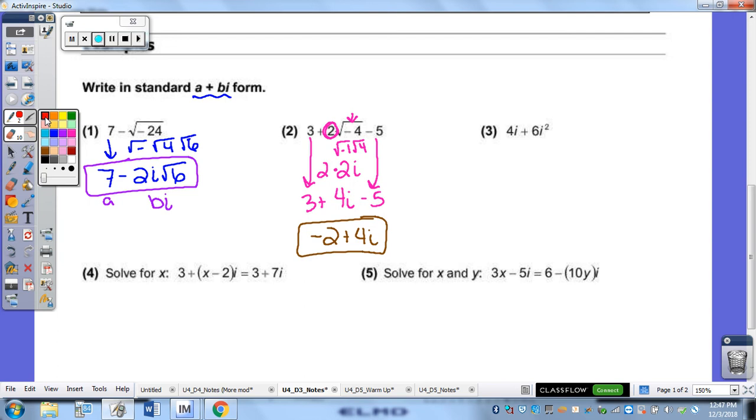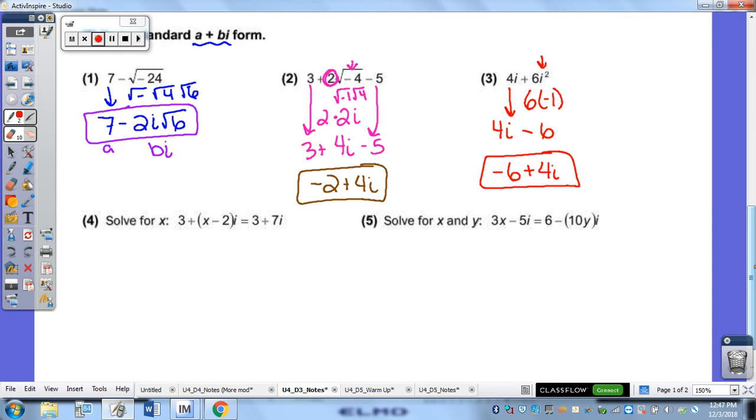For number 3, anytime you have an I where the exponent is greater than 1, we have to clean that up. So, we have to clean up our I squared here. I squared is negative 1, so that turns into a negative 6. And again, I just bring down my 4I, but this is not in the correct order. I've got to switch the orders here. We get negative 6 plus 4I. That negative sign stays with your 6.